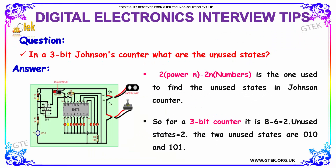The next question is: in a 3-bit Johnson's counter, what are the unused states? The answer uses the formula 2^n minus 2n to find the unused states. For a 3-bit counter, that is 8 minus 6, equal to 2. The two unused states are 010 and 101.